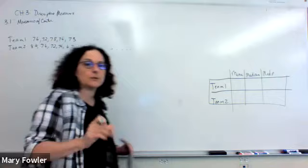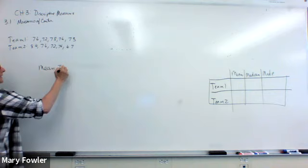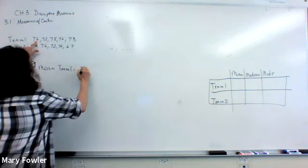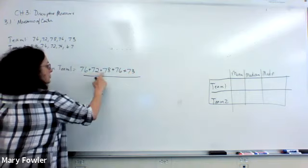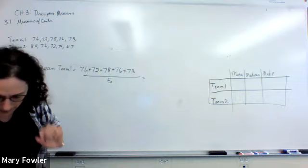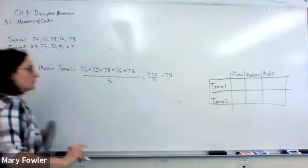Mean. To calculate the mean, we want to add up all the numbers and then divide by the number of observations. So we have the mean for team one is going to be equal to 76 plus 72 plus 78 plus 76 plus 73 divided by one, two, three, four, five. And you can add all that up and divide by five. We get 375 divided by five and that gives me 75. So the mean for team one is 75.